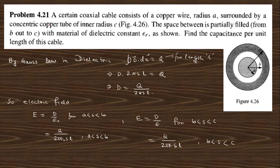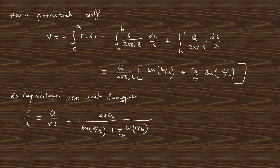Question 4.21: a certain coaxial cable consists of a copper wire of radius a surrounded by a concentric copper tube of inner radius c. The space between is partially filled by a dielectric. Find the capacitance per unit length of this cable. From Gauss's theorem, the displacement D is obtained, and the electric field is derived for the two regions (a to b and b to c). The potential is the sum of the two integral contributions, and the capacitance per unit length is Q/V.